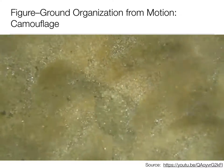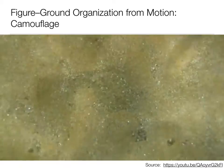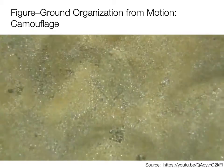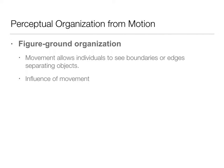Especially in the case of this flounder, if you don't know he's there, you really can't see him until he moves because he is so well camouflaged. This movement allows us to see boundaries or edges that separate the object — we can see the flounder compared to the sandy bottom when there's movement. This influence of movement is a really important category in figure-to-ground organization.